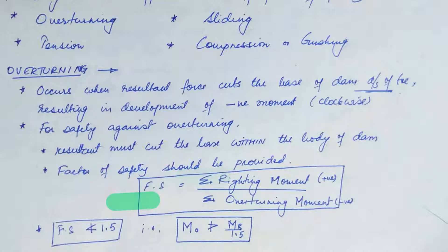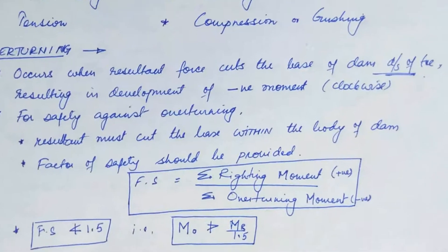the resultant must cut the base within the body of the dam. And the factor of safety should be provided so that Fs, the factor of safety, should be equal to sigma, the writing moment, upon sigma, the total overturning moment. Writing moment, that means all the positive moments. And overturning moments are all the negative moments.